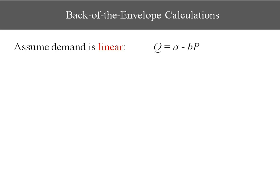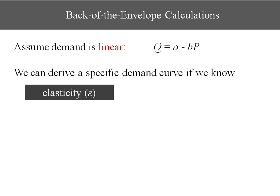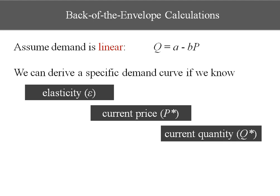To do back-of-the-envelope calculations, we're going to assume demand is linear, so it takes the form Q equals A minus BP. Now if we know the elasticity, the current price, and the current quantity, we can derive a specific demand curve. That is, we can figure out what A and B are in this general equation.